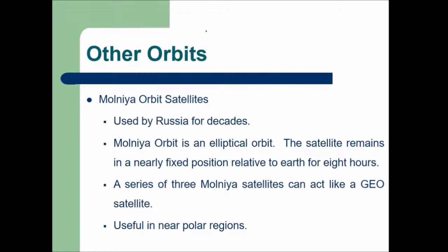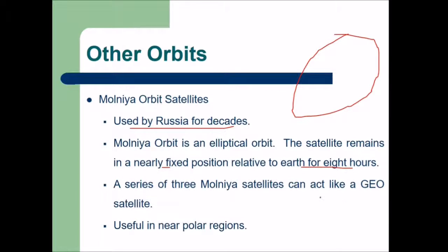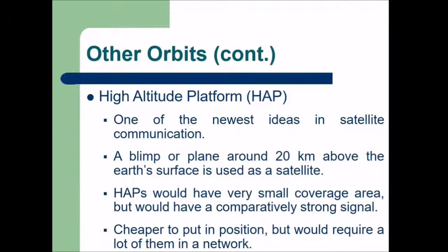Molniya orbit satellites, used by Russia for decades, follow an elliptical orbit. The satellite remains in a nearly fixed position relative to earth for 8 hours, and a series of 3 Molniya satellites can act like a GEO satellite — useful in near-polar regions. High Altitude Platforms (HAPs) are another newer idea: a blimp or plane around 20 km above the surface used as a satellite. HAPs have a very small coverage area but a comparatively strong signal; they are cheaper to position but require many in a network.